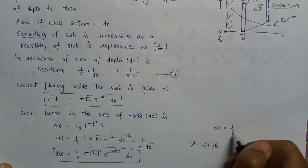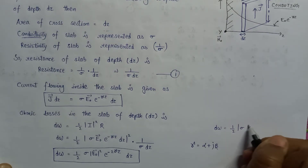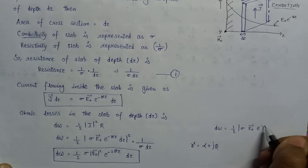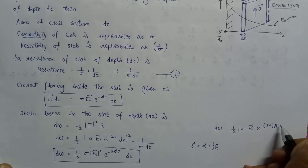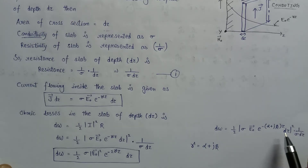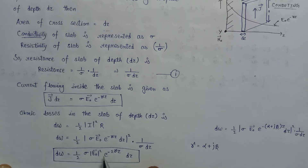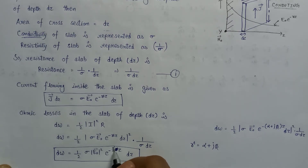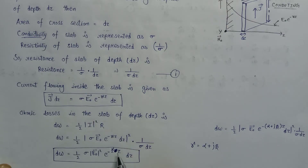Taking the modulus, dw equals one-half times sigma times E0 squared times e to the power minus 2 alpha z times dz. We will use the value of alpha in the upcoming derivation. There is a correction here that the exponent involves alpha, not gamma, in this expression.